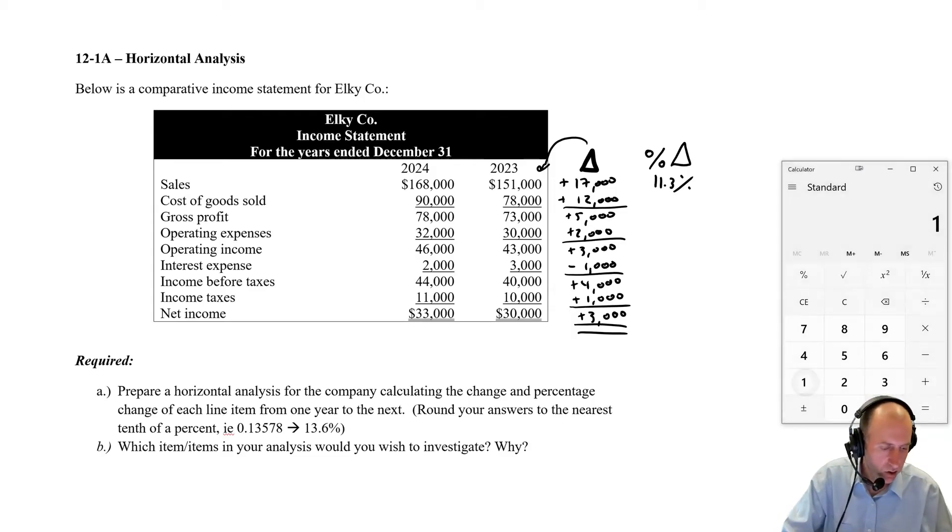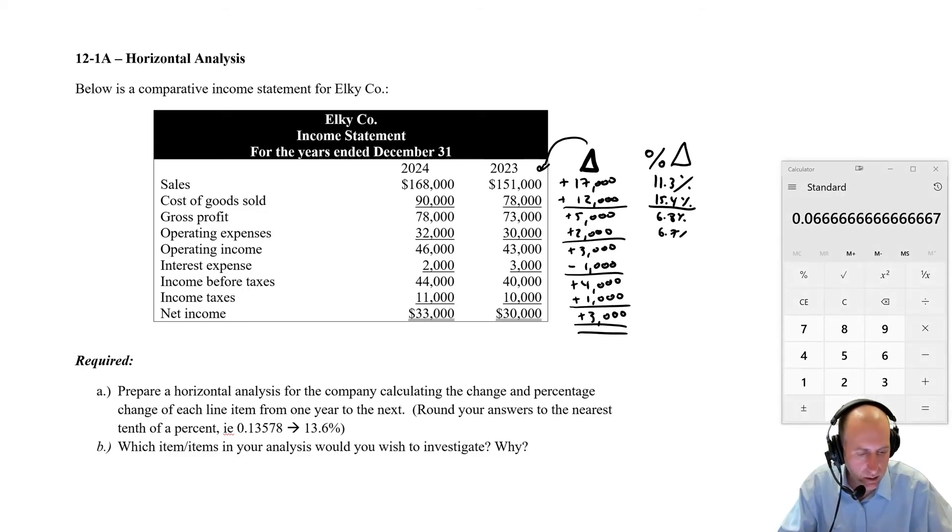My cost of goods sold, $12,000 divided by 78, 15.4%. My gross profit, 5 divided by 73. My gross profit is up 6.8%. My operating expenses, up 6.7%. My operating income, 6.97%. 7.0%, I guess that rounds to. My interest expense, 1 divided by 3, it's down 33%. 33 and a third. 4 divided by 40, I can already tell you that that's up 10.0%. I didn't put pluses here, but these are all up, up, up, up, up. Income taxes are also up 10%. And our profits, up 10%.